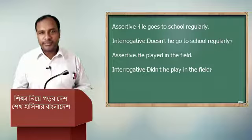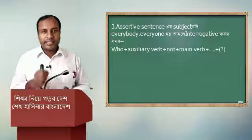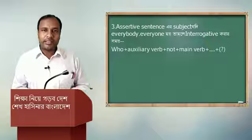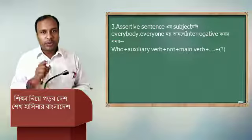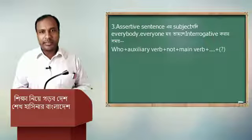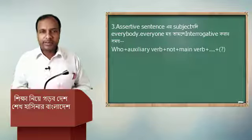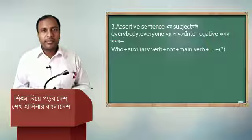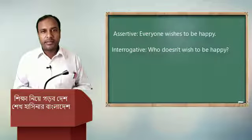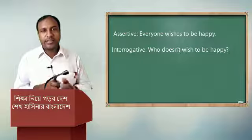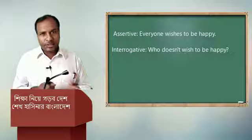Point three: if the subject of an assertive sentence is 'everyone' or 'everybody', then when making it interrogative, the formula is: who + auxiliary verb + not + main verb + ... + question mark. For example: 'Everyone wishes to be happy.' The interrogative sentence will be: 'Who does not wish to be happy?'